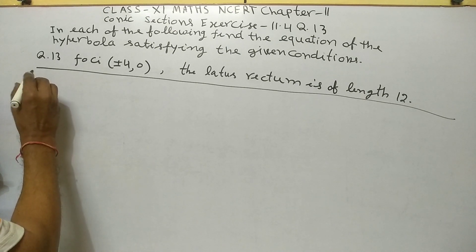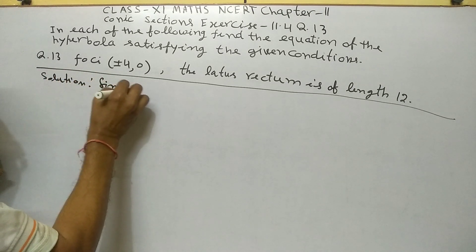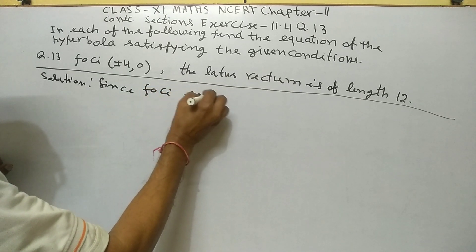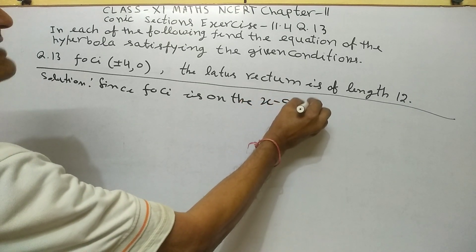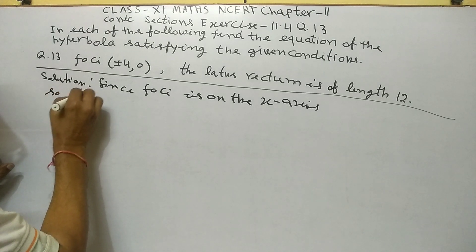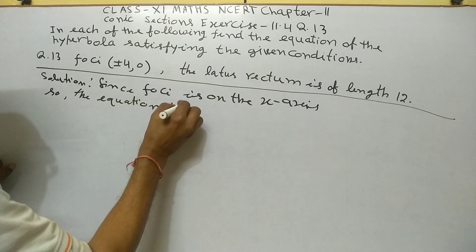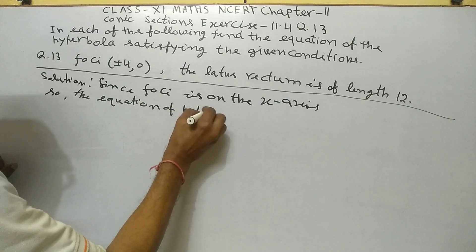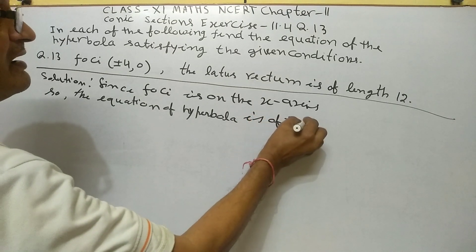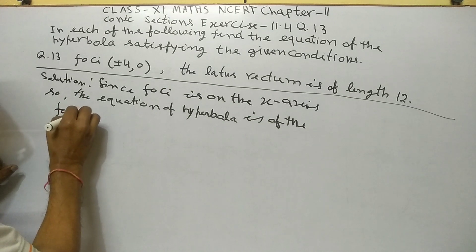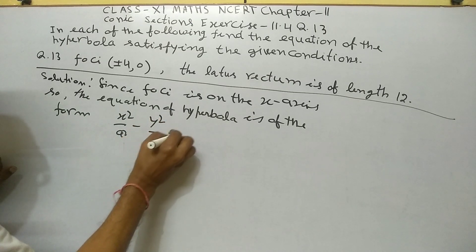Solution. Since foci are on the x-axis, the equation of hyperbola is of the form x²/a² - y²/b² = 1.